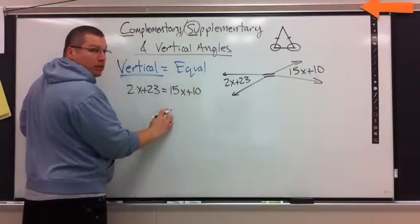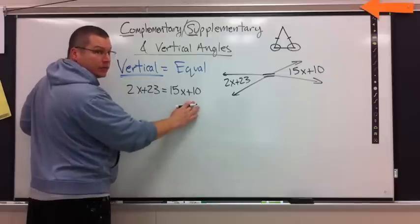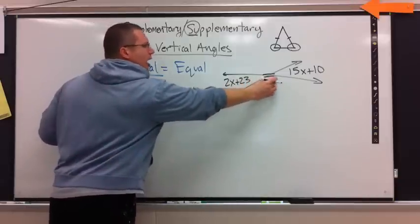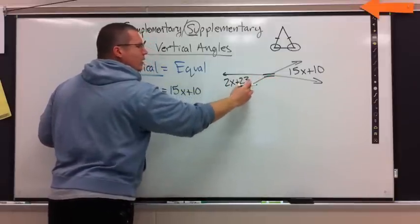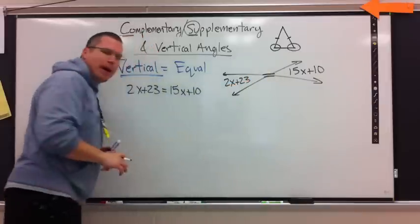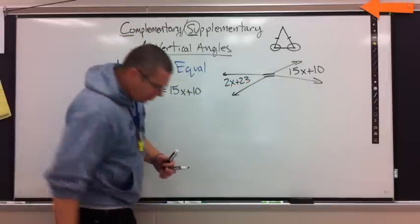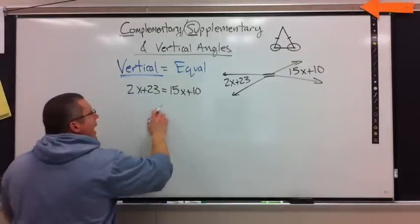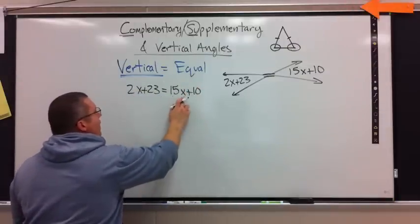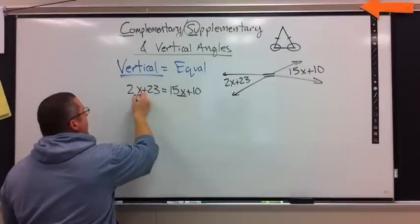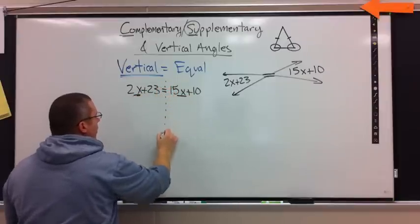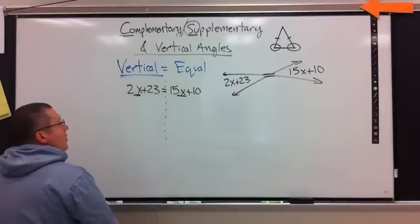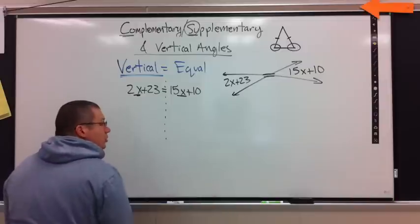How come there's no 90? What about 180? The reason is, is because these are not complementary or supplementary. Vertical simply means they're back to back and they're equal. So, what do I do? If you remember back with the triangles, I have variables on both sides. Here and on this side of my equal sign. So, what I need to do is get rid of them. At least on one side.